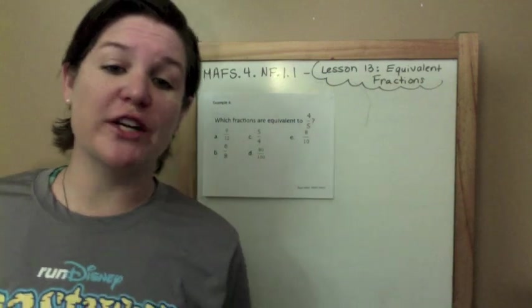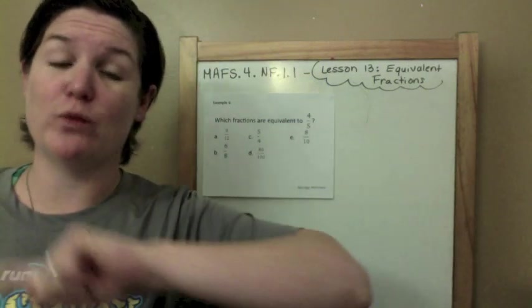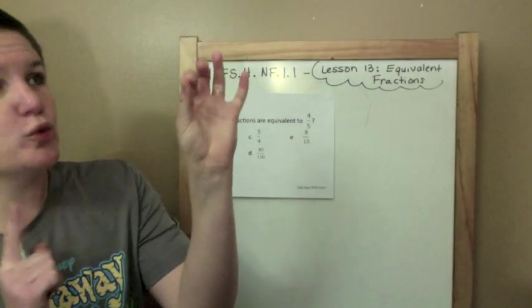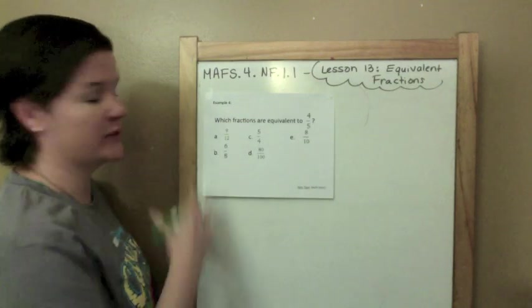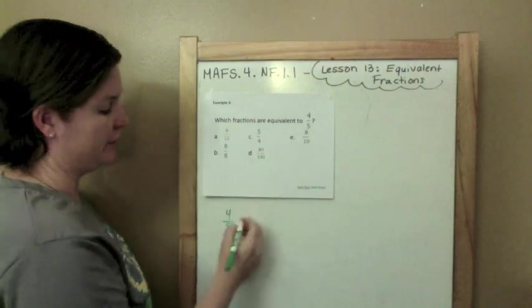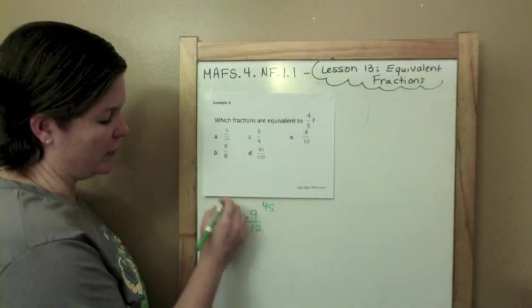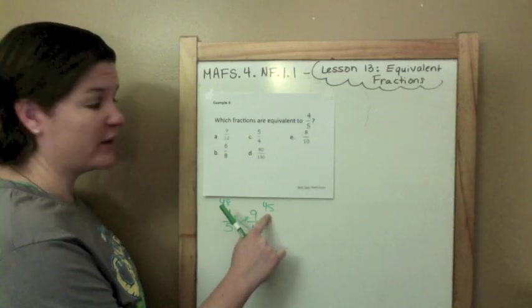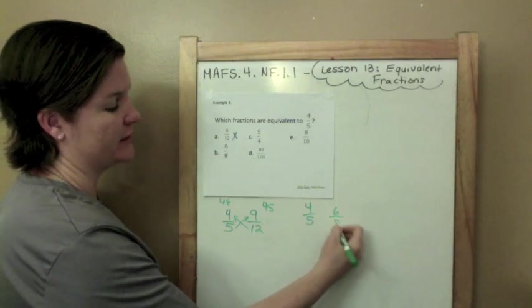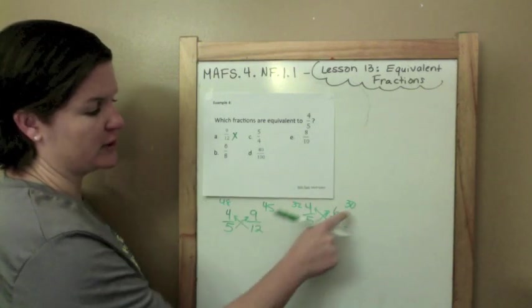Example 4. Which fractions are equivalent to 4 fifths? This type of problem is a multi-select problem, meaning that there could be more than one correct answer and we must find all the correct answers in order to get the point. So let's do this. Okay, I'm going to use my arrow method again to prove that they are equivalent. So this is going to be the faster way to do this. So I'm going to take 4 fifths and I'm going to set them equal to each fraction. So first, 4 fifths, let's see if it's equal to 9 twelfths. 5 times 9 is 45, 12 times 4 is 48. Is 48 equal to 45? Nope. That's wrong. Let's try 4 fifths seeing if it's equal to 6 eighths. 5 times 6 is 30, 8 times 4 is 32. Is 32 equal to 30? No.